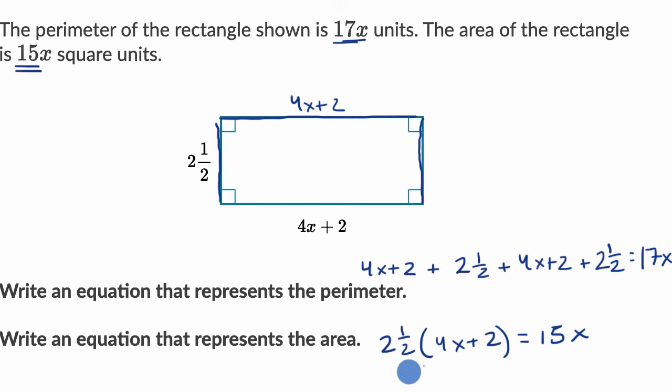We could have also written it the other way. We could have said that the area, which is 15x, is equal to 2½, the height, times 4x plus two. So a lot of different ways to approach it. But in both cases, we are now done.